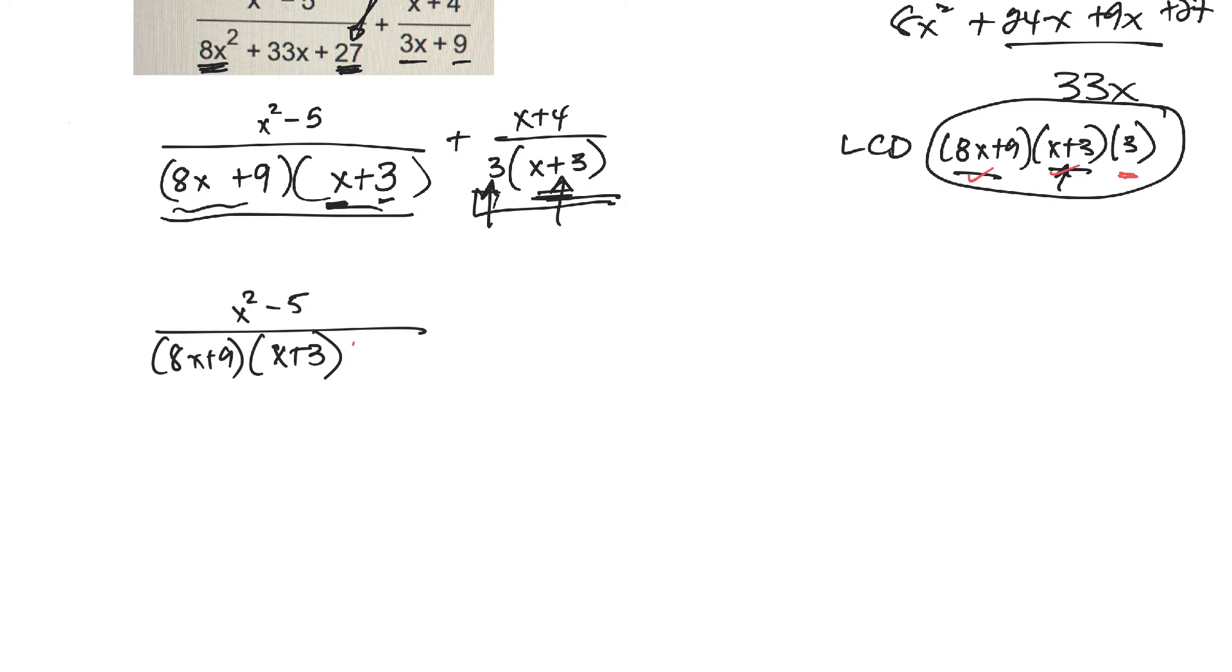I don't have the 3. So I need to include the 3 here. If I include it on the bottom, I'm also going to need to include it on the top. Okay, plus over here, I have x plus 4 on the top, and then 3 times x plus 3.